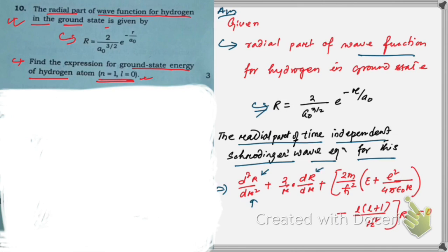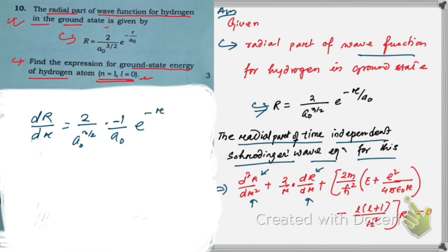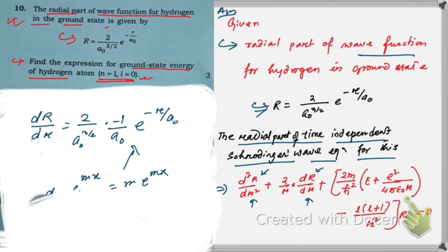We need to find the first and second derivatives of R with respect to r. The value of R is given. Differentiating once with respect to r gives: dR/dr = 2/(a₀^(3/2)) · (−1/a₀) · e^(−r/a₀). We use the rule that d/dx[e^(mx)] = m·e^(mx).